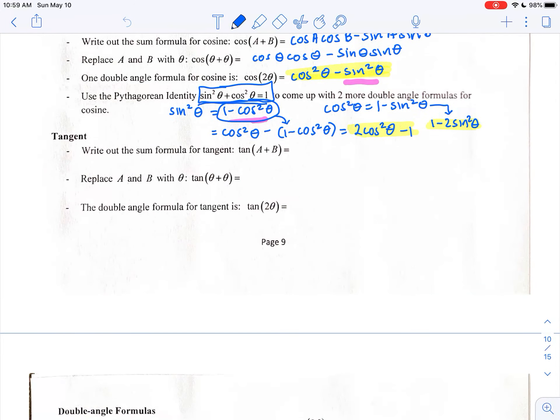So the tangent sum and difference formula is tangent of angle A plus tangent of angle B all over 1 minus tangent of A times tangent of B.